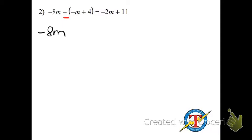I'm going to distribute a negative 1 to each of these, which is just the same as changing the signs. So negative 1 times a negative m will now make this a plus m. Negative 1 times a positive 4 will make that a negative 4. Okay? Bring down the equals and bring down the right side.